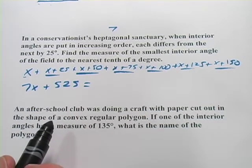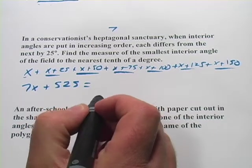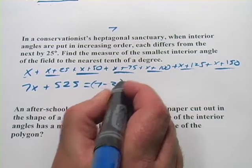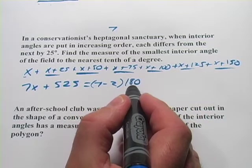The formula for the sum of the interior angles of a polygon is n minus 2, and n is the number of sides. Well, the number of sides, we know that's seven, so that's seven minus 2 times 180.